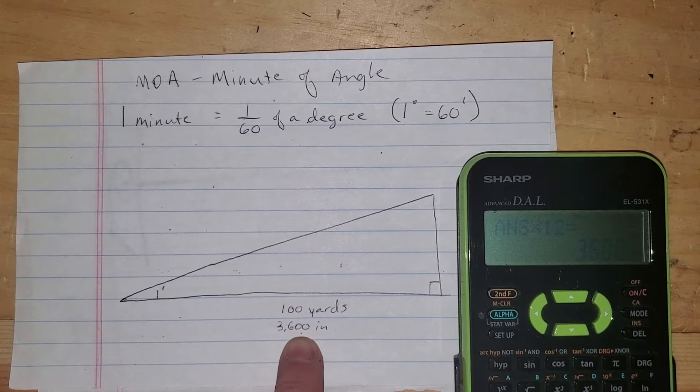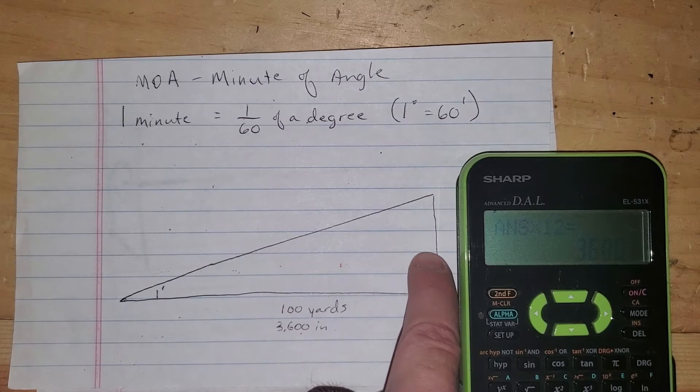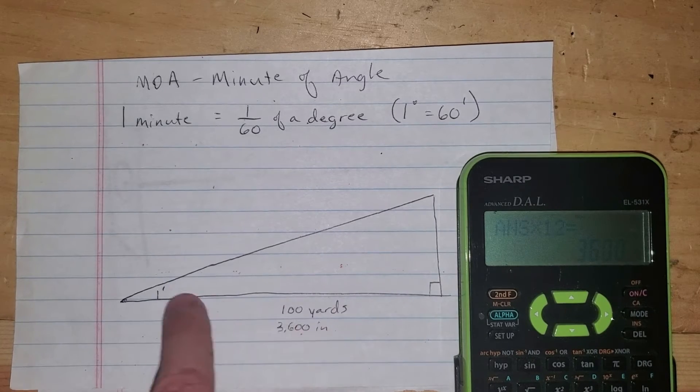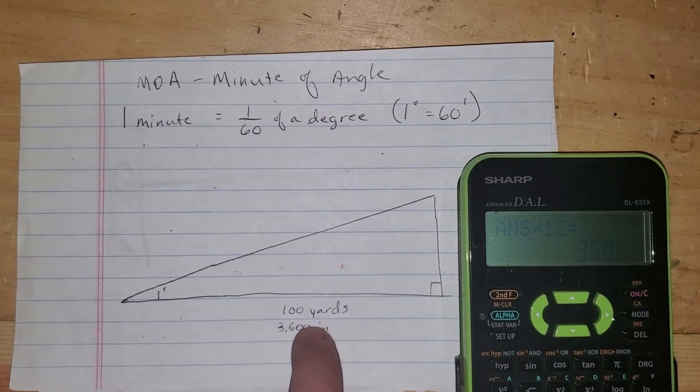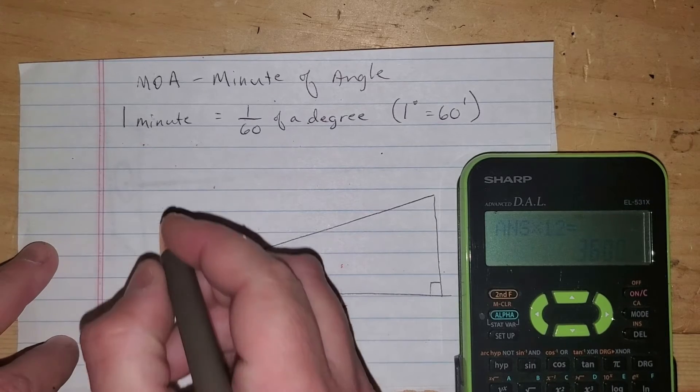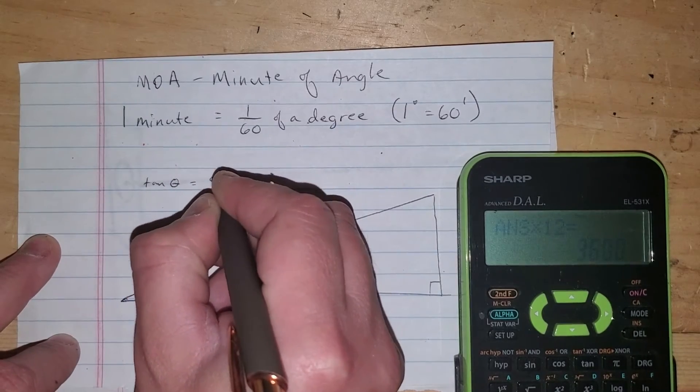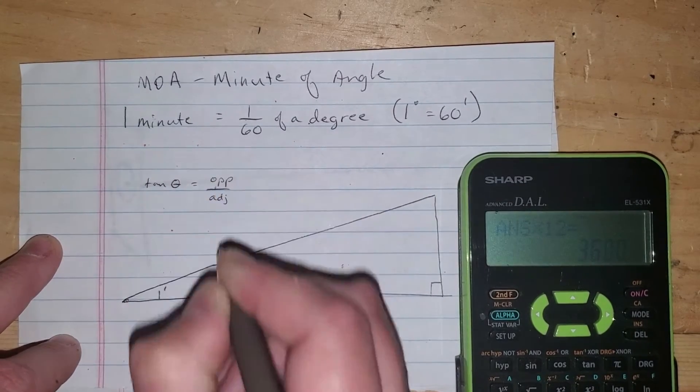Now, if you remember your basic trigonometry, this angle, this side's across from it, that's our opposite. This side's next to it, that's our adjacent. Opposite over adjacent is a tangent equation, and so our equation is going to be tangent of theta equals opposite over adjacent.